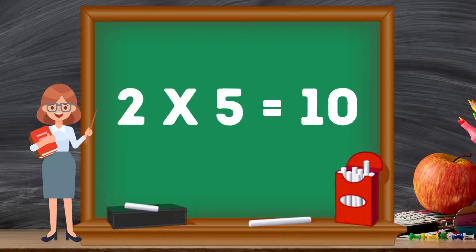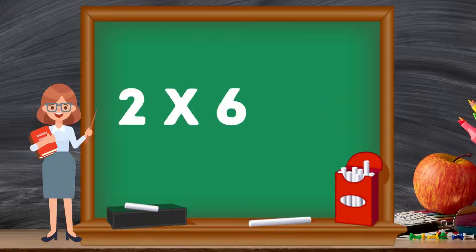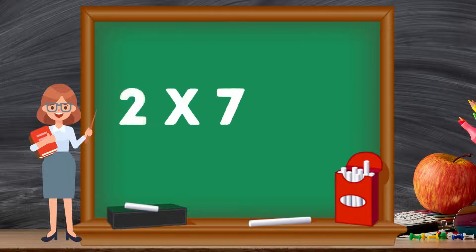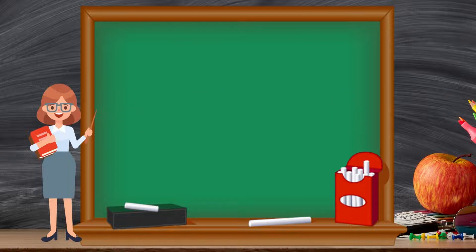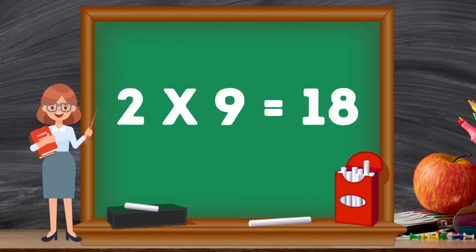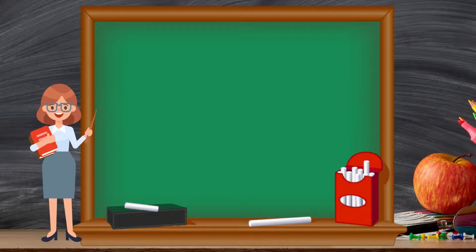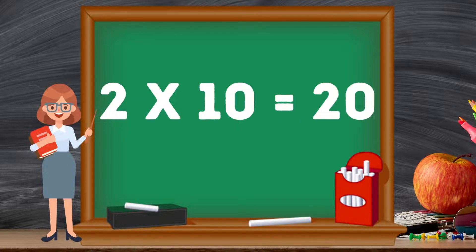Two fives are ten, two fives are ten. Two sixes are twelve. Two sevens are fourteen. Two eights are sixteen. Two nines are eighteen, two nines are eighteen. Two tens are twenty, two tens are twenty.